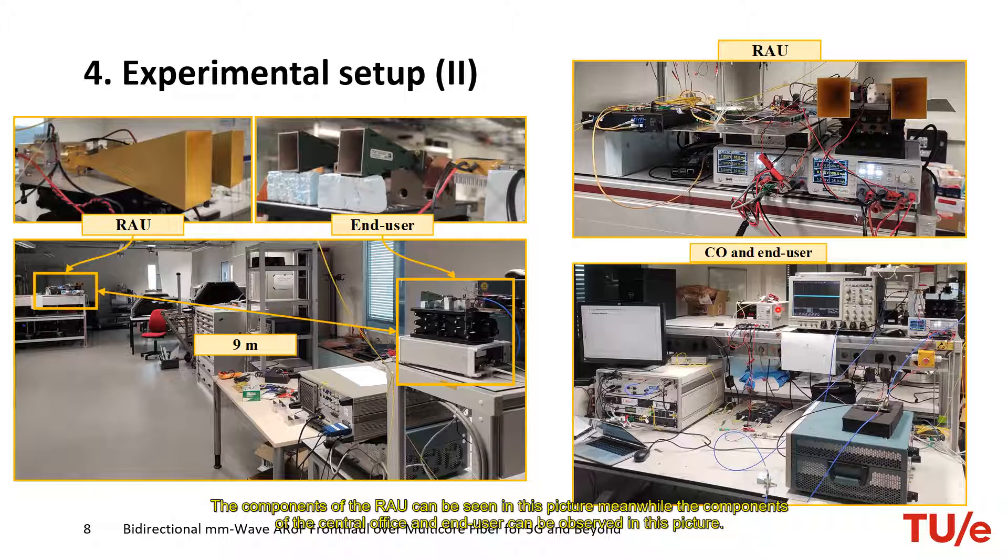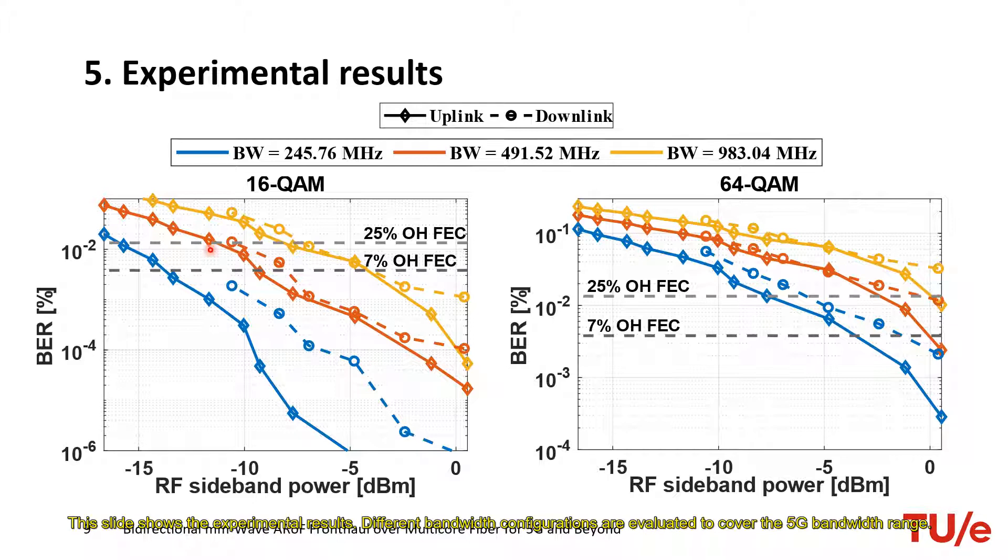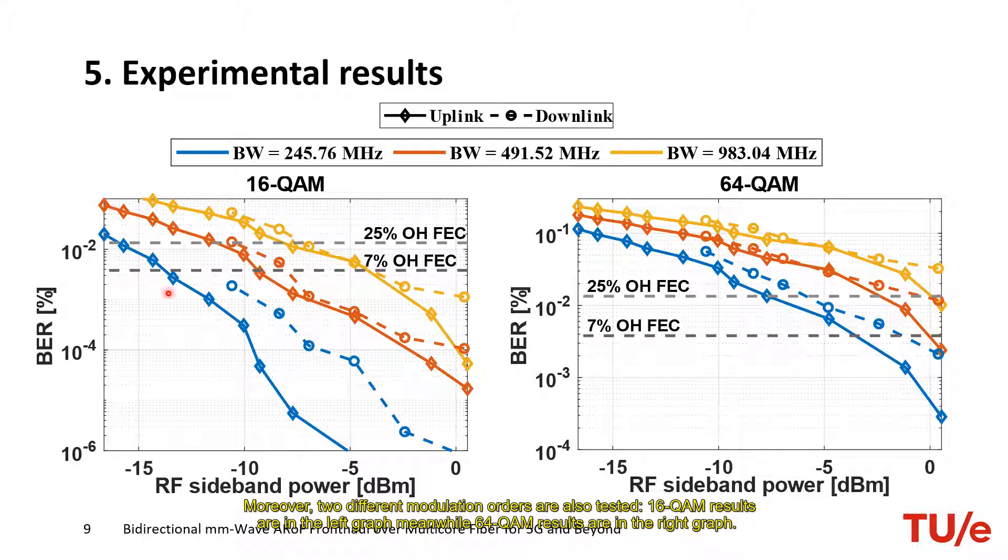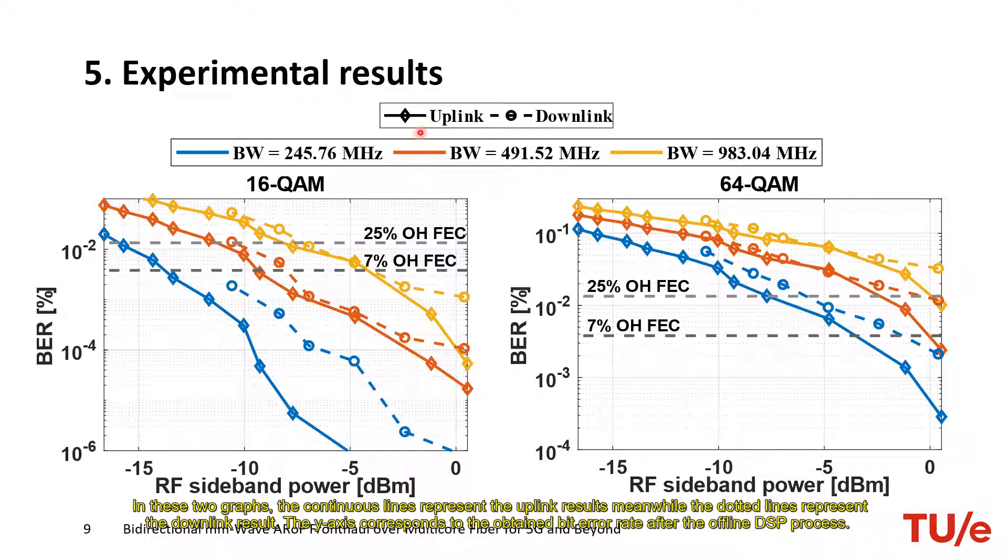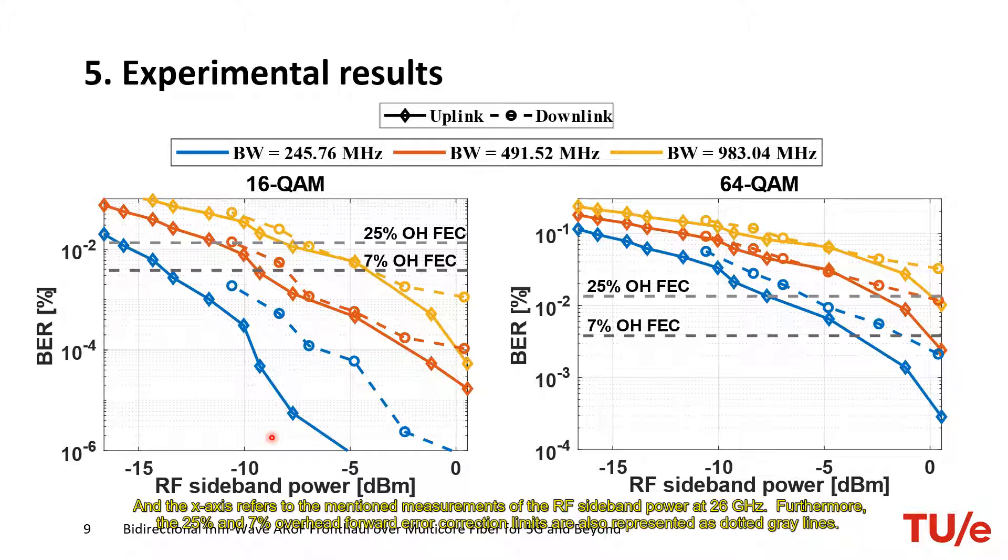This slide shows the experimental results. Different bandwidth configurations are evaluated to cover the 5G bandwidth range. Moreover, two different modulation orders are also tested. 16QAM results are in the left graph, meanwhile 64QAM results are in the right graph. In these two graphs, the continuous line represents the uplink result, meanwhile the dotted lines represent the downlink result. The y-axis corresponds to the obtained bit error rate after the offline DSP process. The x-axis refers to the mentioned measurement of the RF sideband power at 26 GHz. Furthermore, the 25% and 7% overhead forward error correction limits are also represented as dotted gray lines.